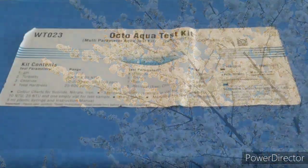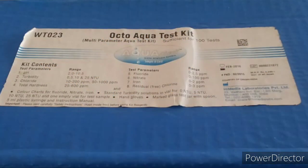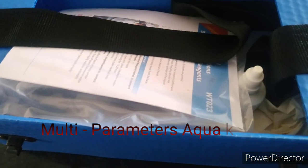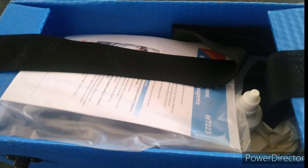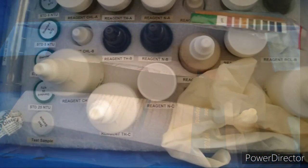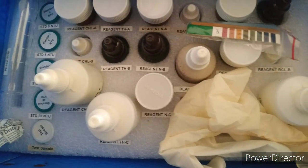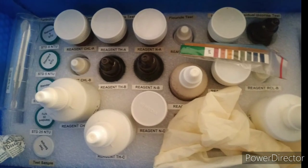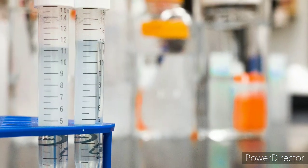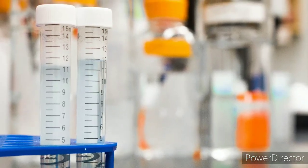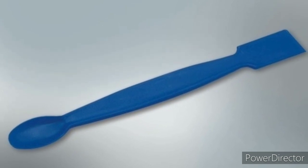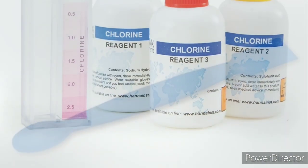Multi-parameter aqua test kit. It consists of a booklet which you can see here, reagents which we are using for conducting our test, a test tube, a spatula, and chlorine reagent.